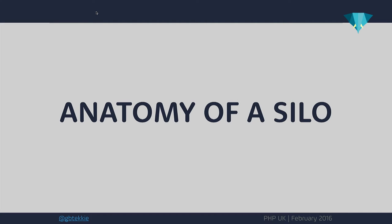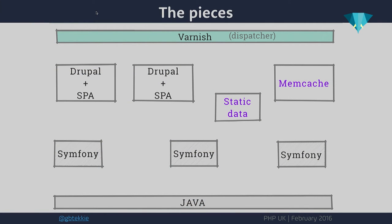A silo is just a generic concept — a bunch of servers with different targets. But what exactly do we put in a silo? First, we use Varnish as a dispatcher mechanism and hide all the interactions with the silo behind Varnish. The Drupal and single-page applications are the frontend boxes. The Symfony machines are the backend boxes. Then you have Memcache for sessions, because sessions in the database are too slow. And then the static data, which we completely separated from Memcache — static data was filesystem-based. Varnish communicating to the static data layer was much faster because it could already cache all static information straight in Varnish.